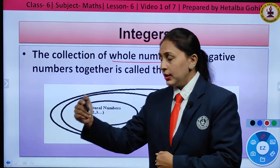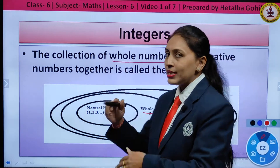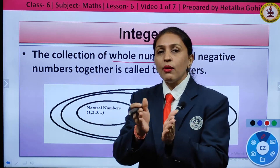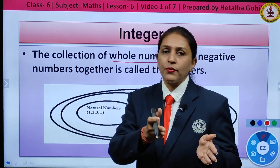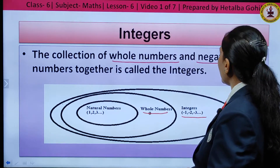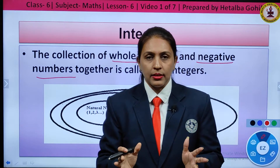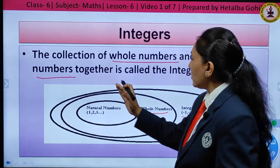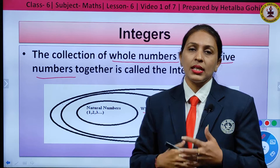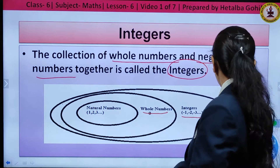Going further, when we use whole numbers and their negatives — the negative of 1 is minus 1, negative of 2 is minus 2 — using all whole numbers and their negatives forms the collection of integers. So the set of all whole numbers and negative numbers gives us the new set, that is integers.